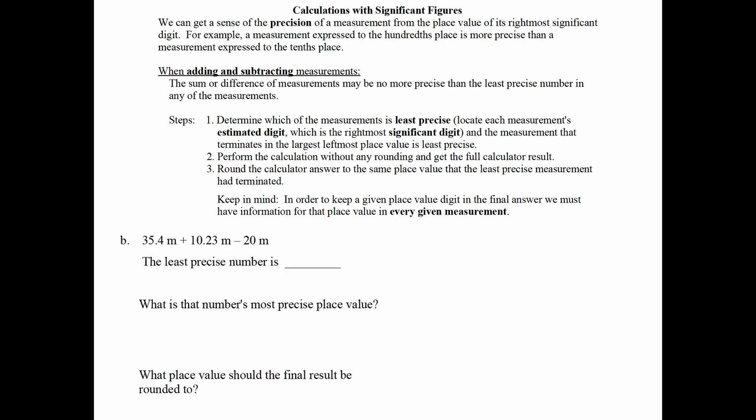And it's all about just being aware of the uncertainty in your calculation and expressing that. Try this one for yourself. So the least precise number here is actually the 20. 35.4 is estimated to the tenths, 10.23 is estimated to the hundredths. But 20 is only estimated to the tens place, which is the least precise place value by far. So according to the procedure that I showed previously, we want to round our final answer to the tens as well.